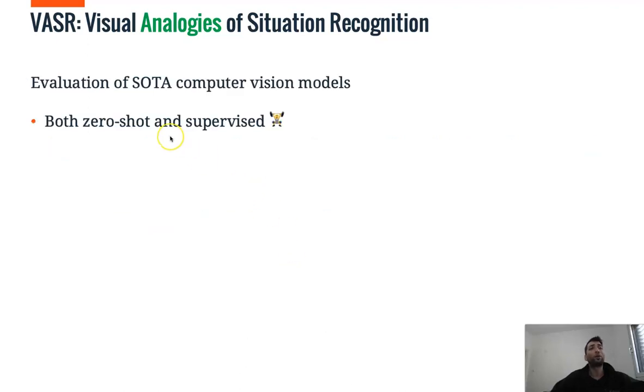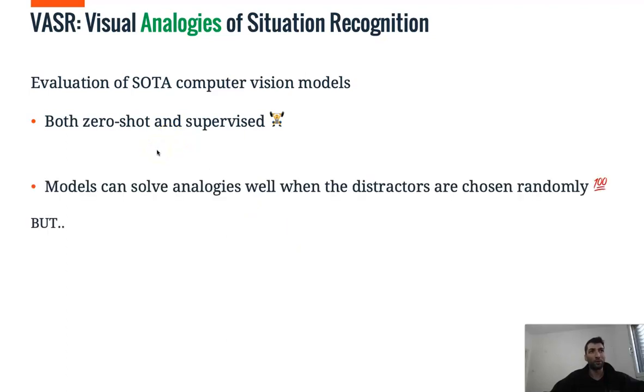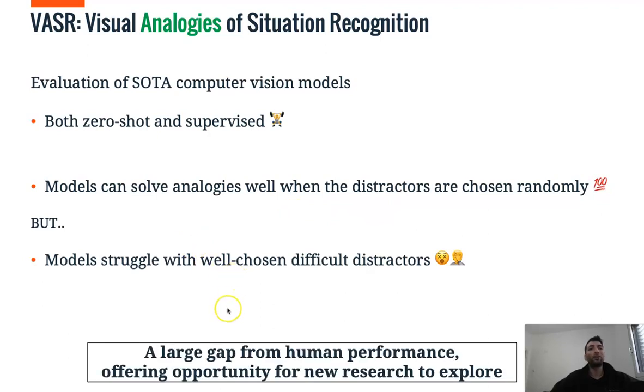We evaluate state-of-the-art computer vision models, both in zero-shot and supervised experiments. And we show that models can solve analogies well when the distractors are chosen randomly. But all models struggle with well-chosen difficult distractors. And we have a large gap from human performance, offering opportunity for new research to explore.